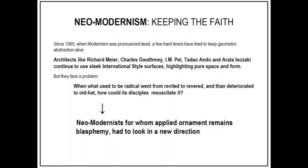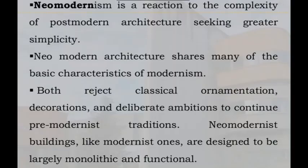The Neo-Modernists, for whom applied ornamentation was still a taboo, had to look in a new direction. In a way, Neo-Modernists wanted to continue with the visual style of Modernism while simultaneously criticizing the monotony and obsoleteness of the Modernistic style. Neo-Modernism came as a reaction to the complexity of Post-Modernism, seeking a greater simplicity.